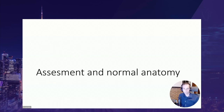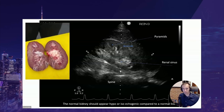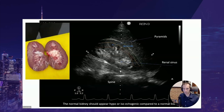Moving to the assessment and normal anatomy of the kidney: the kidney is an intra-abdominal organ. On a longitudinal view, it is usually flanked by the liver on the right side and the spleen on the left. The first layer, the renal cortex, is usually epo- or iso-ecogenic to the liver. The second layer, the medulla, contains the renal pyramids, which are usually hypo-ecogenic compared to the cortex. In the center is the renal sinus, which is more ecogenic because of fat.